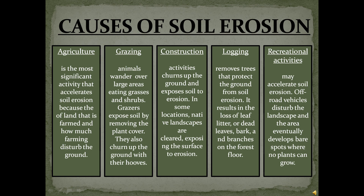Third, construction activities churn up the ground and expose soil to erosion. In some locations, native landscapes are cleared, exposing the surface to erosion. Fourth, logging removes trees that protect the ground from soil erosion. It results in the loss of leaf litter, dead leaves, bark, and branches on the forest floor. Fifth, recreational activities may accelerate soil erosion. Off-road vehicles disturb the landscape and the area eventually develops bare spots where no plants can grow.